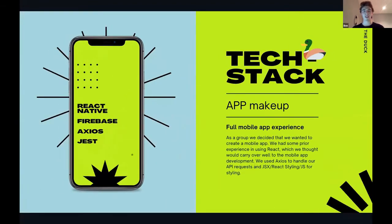For our tech stack, we decided to use React Native for our application, which works with both iOS and Android. We used React Native for the front-end and JavaScript for the back-end. We had done just a little bit of React but not much, so with React Native we had a little bit of adjustment with some of the syntax. Firebase we used as our database back-end. XOS we used to get the APIs off of where we wanted them and onto our application. And JSON we used for testing purposes.